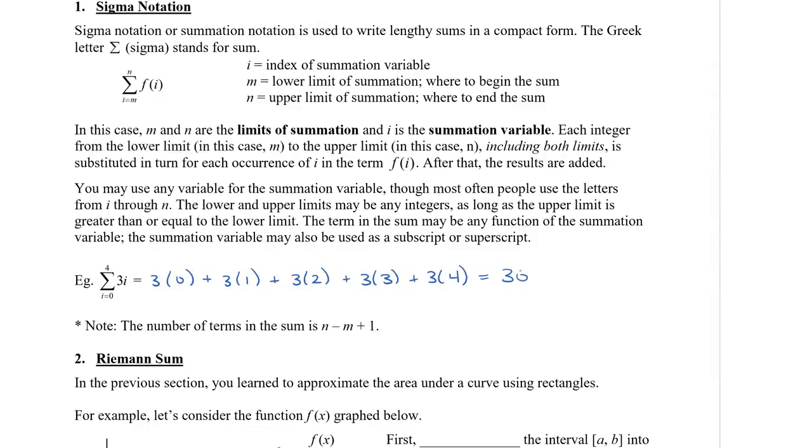Then we add up all of these terms together and we get 30 as our sum. So note, kind of an important little note, is that the number of terms in this sum is equal to n minus m plus 1. So notice that if I take 4 minus 0, I will get 4. And then I need to add 1 to get 5. So in this case, if you check, there are 5 terms in this sequence.